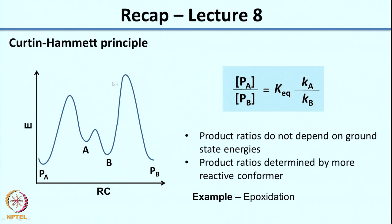In the case where you have a greater difference in activation energy, you would see that the conformer which reacts faster will give you the corresponding product. Essentially, product ratios do not depend on ground state energy — they do not depend on energies of A and B or PA and PB. Product ratios are determined more by the transition state energies.